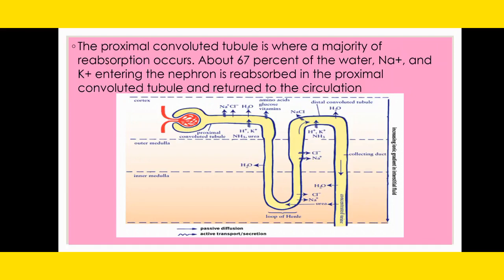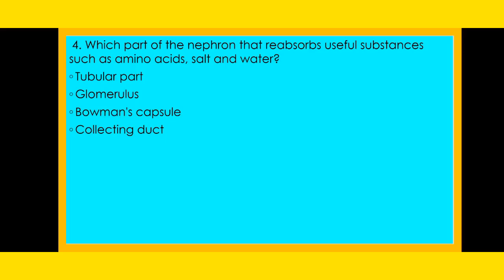This is the structure of a nephron. We have the glomerulus, the Bowman's capsule, the proximal convoluted tubule, then the loop of Henle, and the distal convoluted tubule which connects to the collecting duct. The proximal convoluted tubule is where the majority of reabsorption occurs — about 67% of the water, sodium ions and potassium ions entering the nephron are reabsorbed there and returned to circulation. The fourth question: Which part of the nephron reabsorbs useful substances such as amino acids, salt, and water?